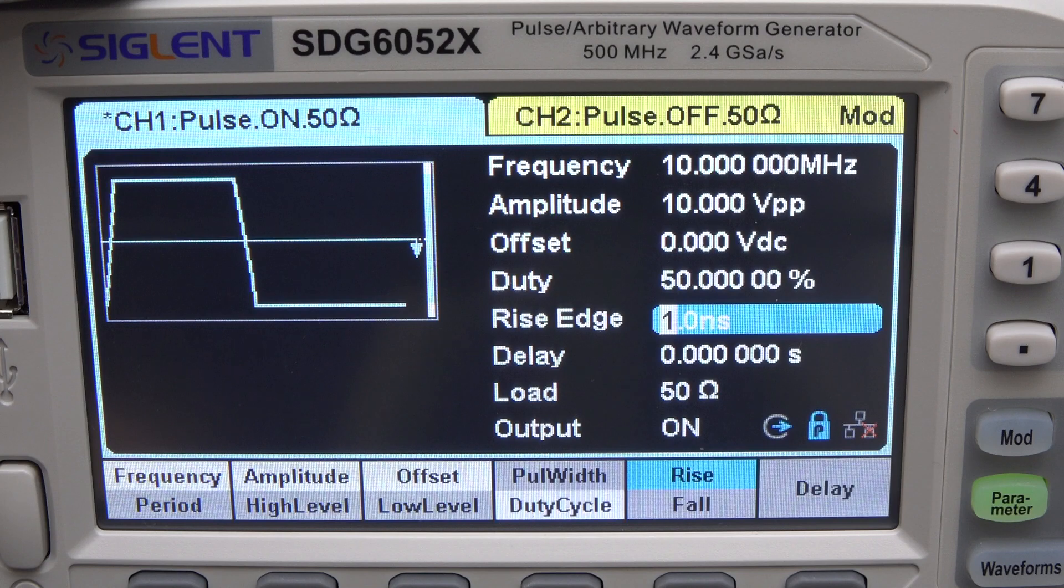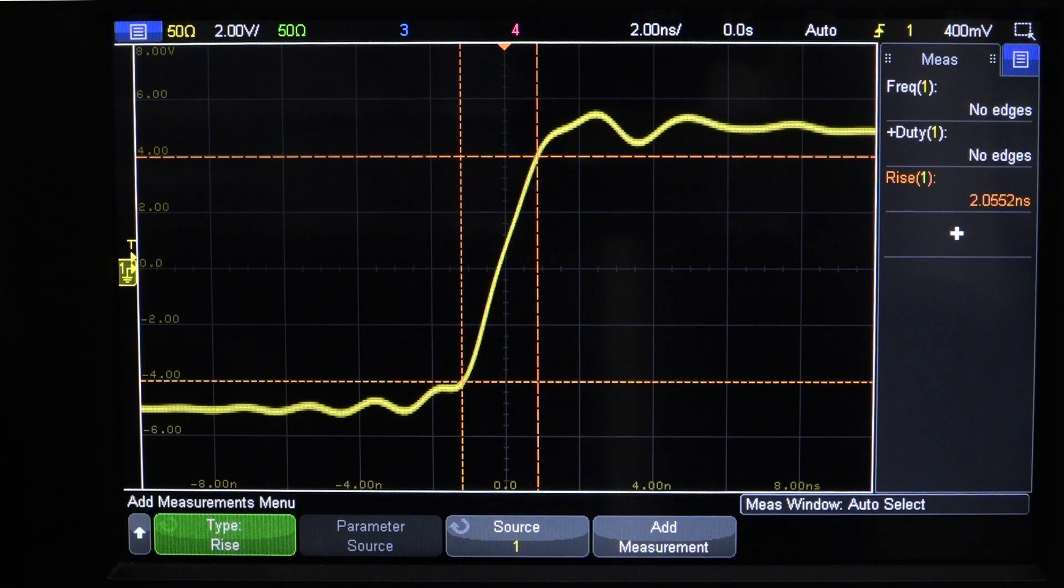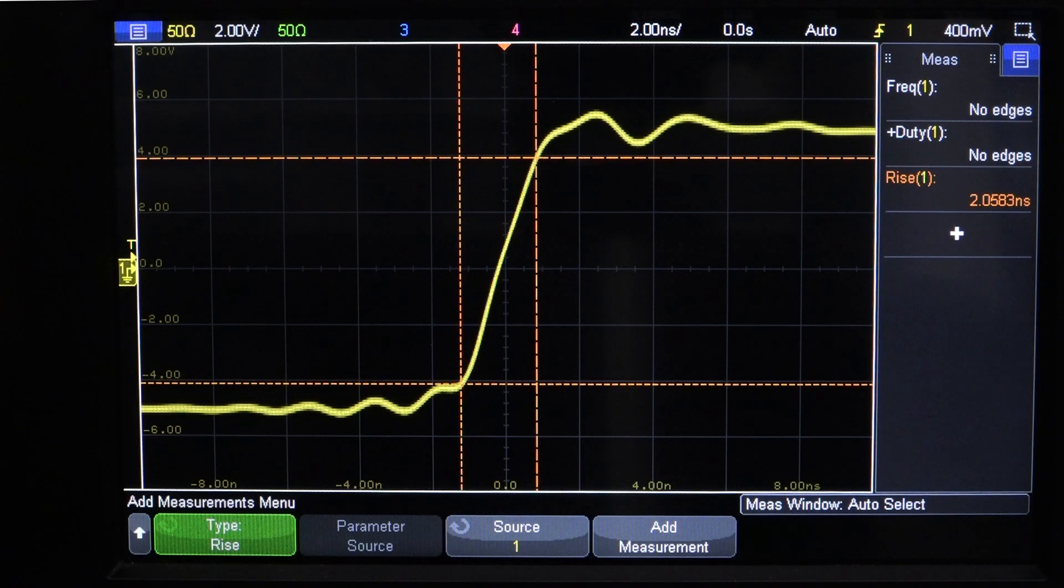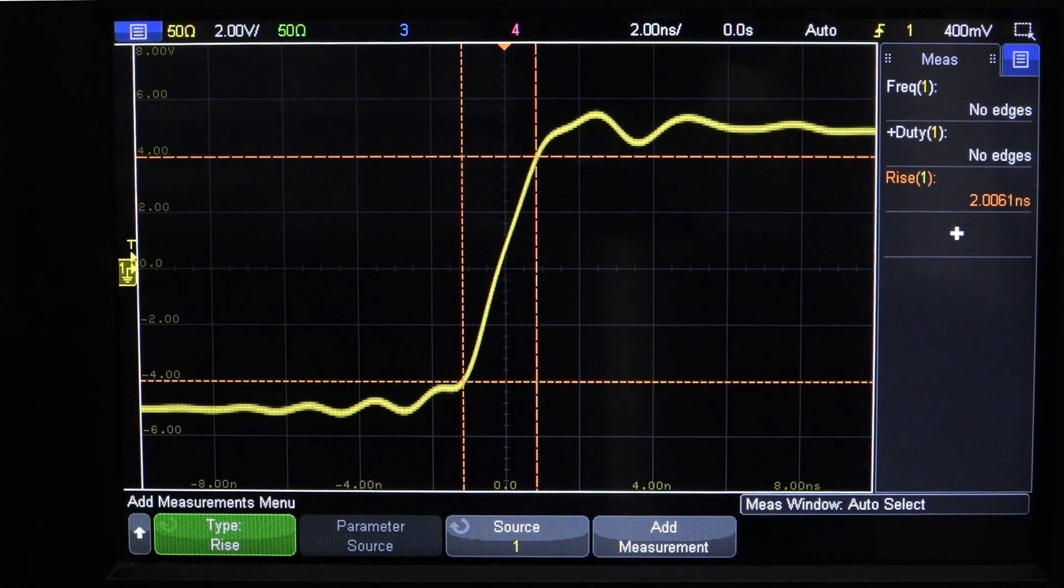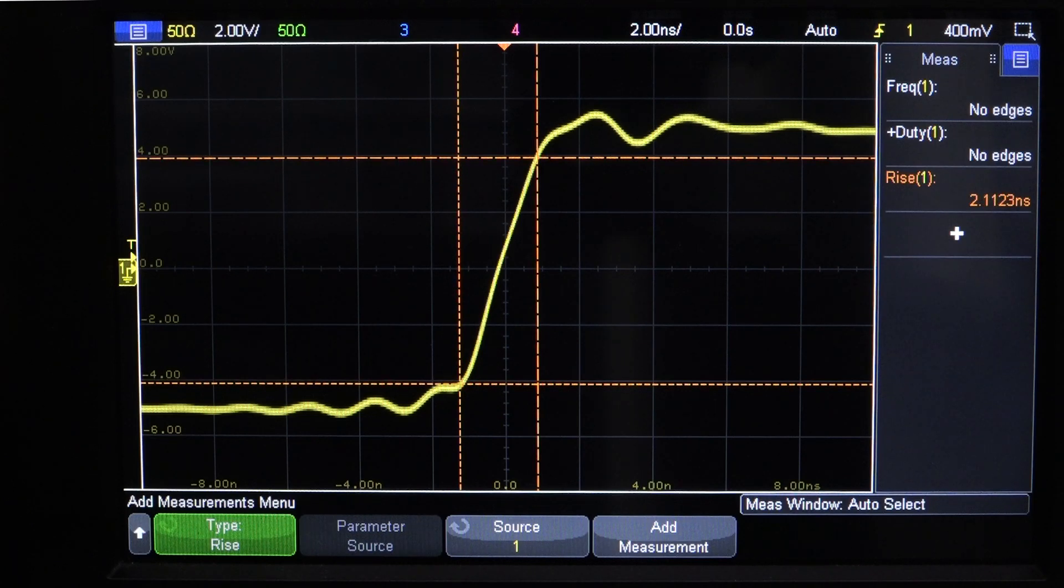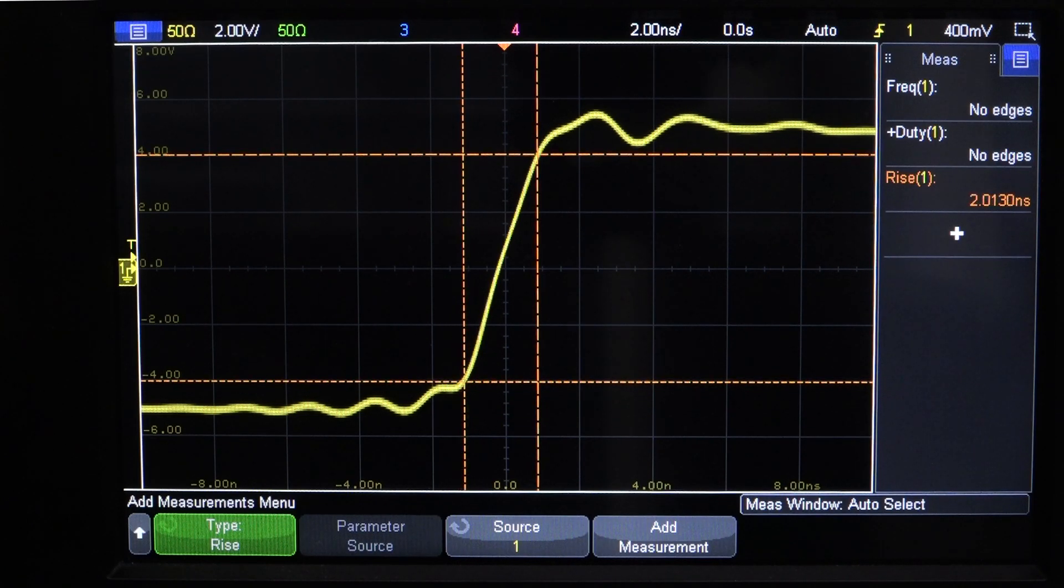Moving on with performance analysis, Siglent claims rise and fall time edges as fast as a nanosecond. I lack the scope bandwidth to properly verify this claim, but that looks about right. And notice that the edges are fast enough that I'm getting noticeable ringing. At the RF frequencies this thing can do, you're really limited by the cables and accurate impedance matching more than the instrument itself.